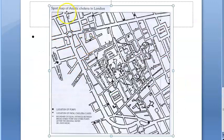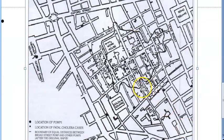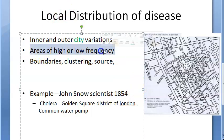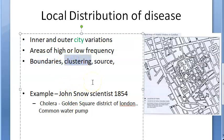Look at an example — this is a spot map of Asiatic cholera in London. They have done some marking here: location of pumps, fatal cholera cases, etc. Basically for a city, for local distribution of disease, inner and outer city variations, you can identify areas of low frequency and high frequency of the disease, understand the boundaries of the disease, and see clustering of the disease and its source.